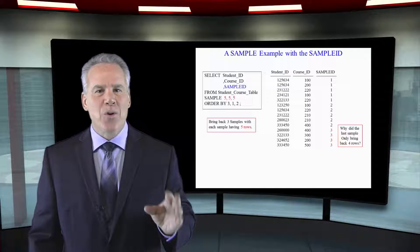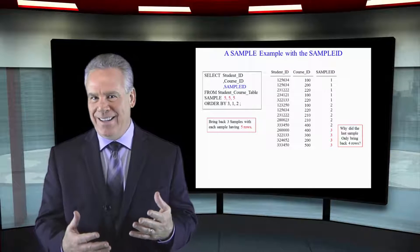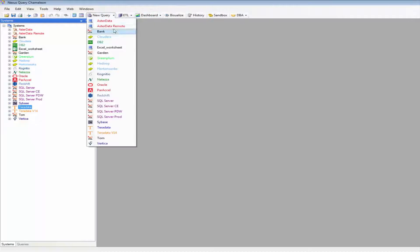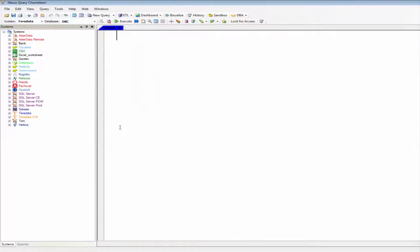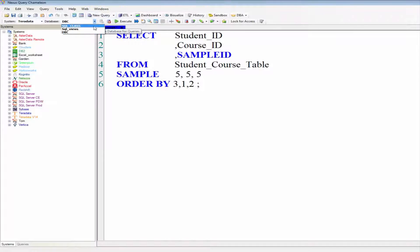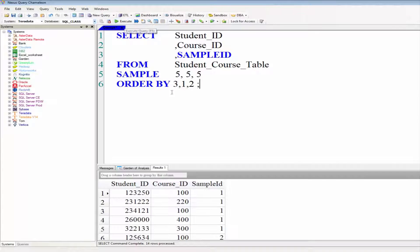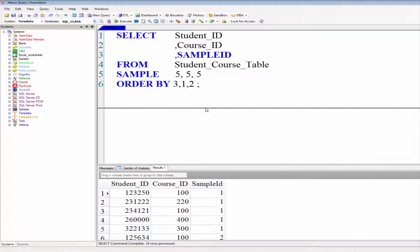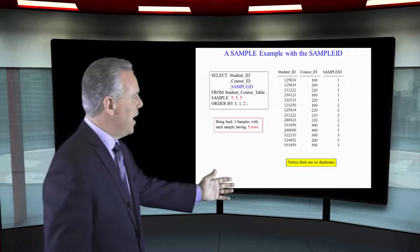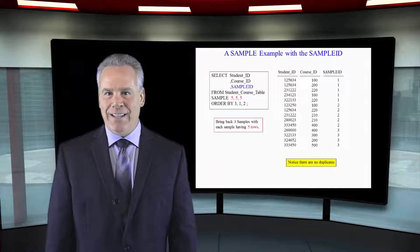Here we're going to learn about the keyword sample ID. Now stay with me here. We're going to select the student ID comma the course ID comma sample ID. It's a keyword. From the student course table sample five comma five comma five and I'm ordering by that sample ID and as you can see here we're going to get five rows coming back in sample ID one, five in sample ID two and five in sample ID three.